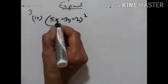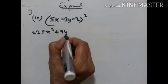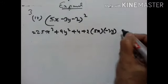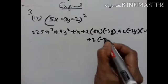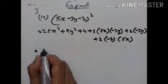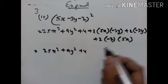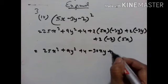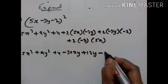Now (5x minus 3y minus 2)²: 5x squared is 25x square, minus 3y squared is 9y square, minus 2 squared is 4. Plus 2 into 5x into minus 3y, plus 2 into minus 3y into minus 2, plus 2 into minus 2 into 5x. This equals 25x square plus 9y square plus 4 minus 30xy plus 12y minus 20x.